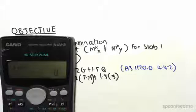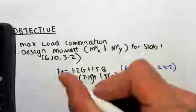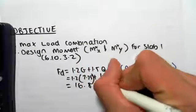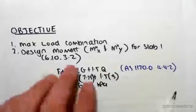1.2 by 7.75 plus 1.5 by 5, which equals 16.8 kPa. Okay, so this is the area load which acts on our slab.